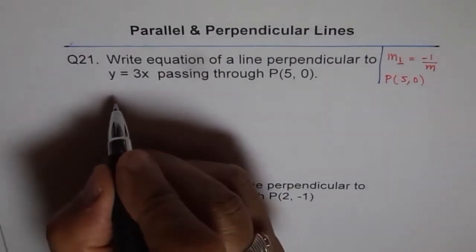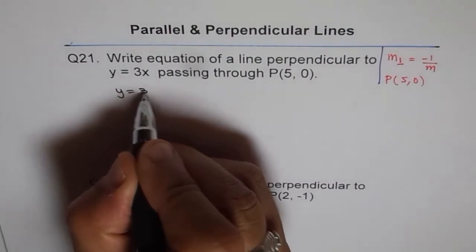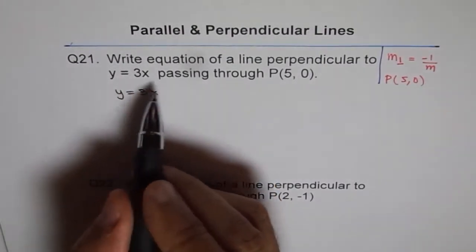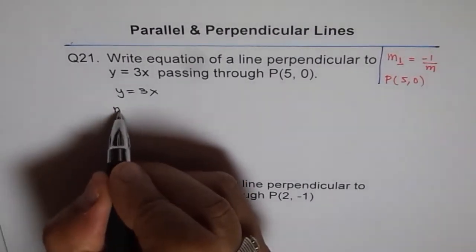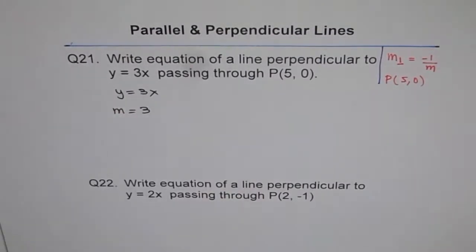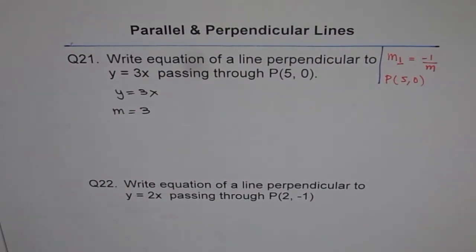We are given slope of a line as y equals 3x, I mean, equation of the line is y equals 3x. From here, 3 is the slope. So we know m is equals to 3. So slope of the line is 3. You can straight read it from the equation, right?